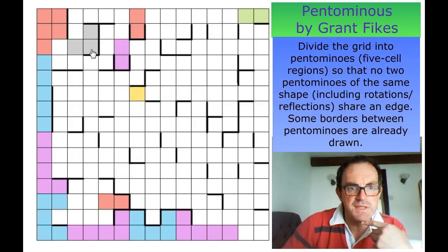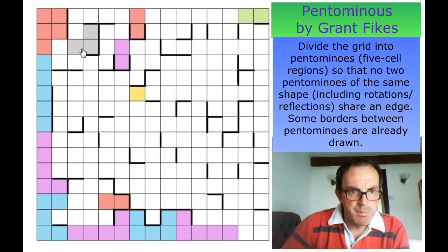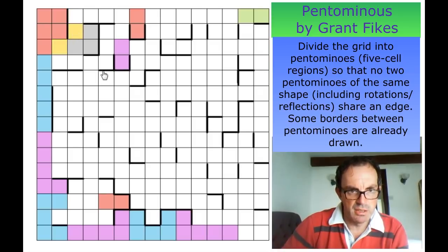Maybe this is now helping with this region. If this gray region can't be a P pentomino, it can't do that, it can't do that. And it can't isolate squares, so it can't be a W pentomino.